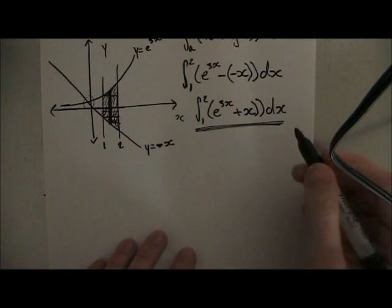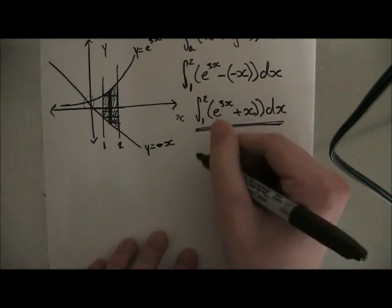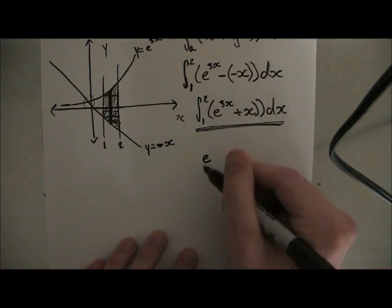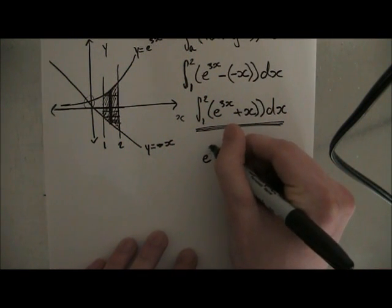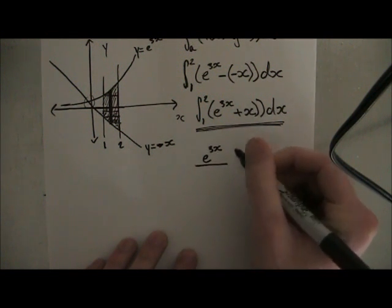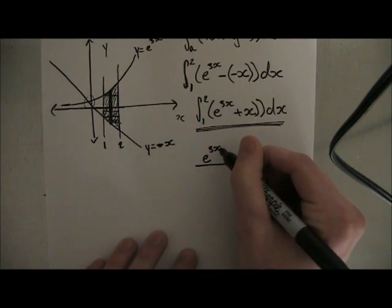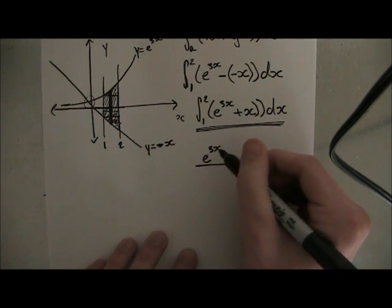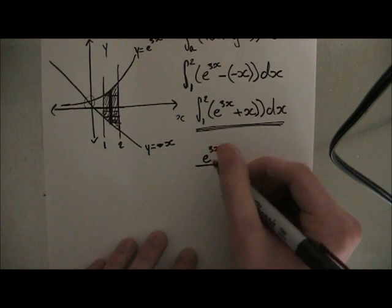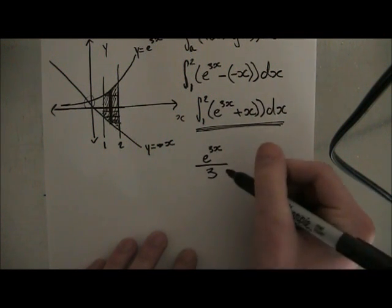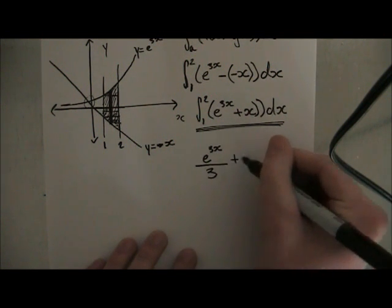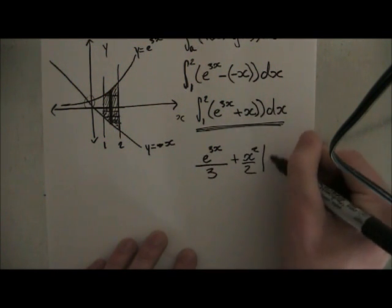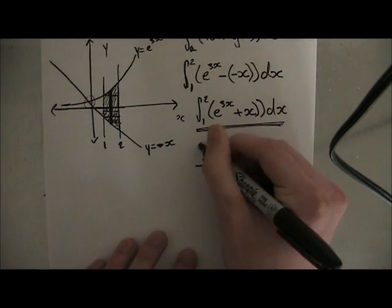Alright, so let's do this. When we take the integral, when you take the integral of anything e, it's just itself divided by the derivative of the power. So the derivative of 3x is just 3, right? So you just divide by 3. And then plus, you should know the integral of x is x squared divided by 2. And this is from 2 to 1. All of this. So if we continue computing that, we're going to get...